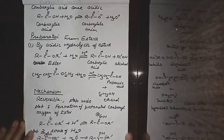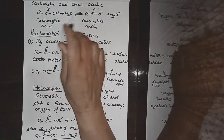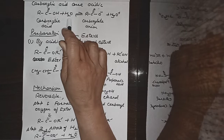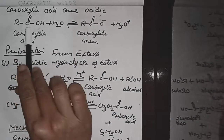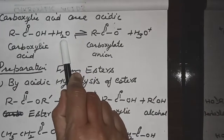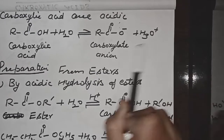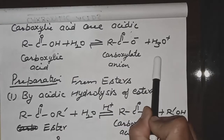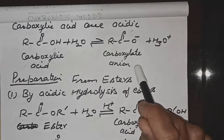You have studied in Plus 2 — though it is not in your syllabus now — that carboxylic acids are acidic in nature. When dissolved in water, they form a carboxylate anion and a hydronium ion, which shows that carboxylic acids are acidic in nature. This is only an introduction.